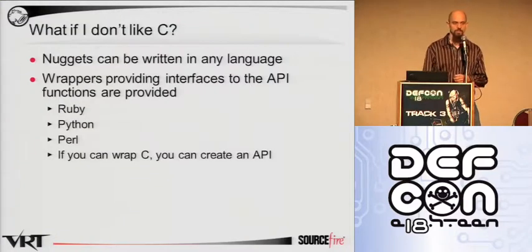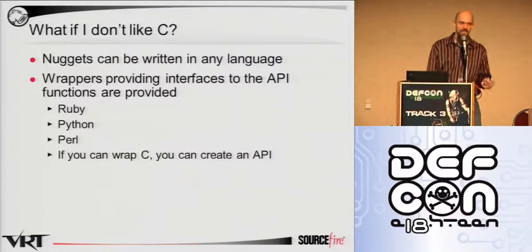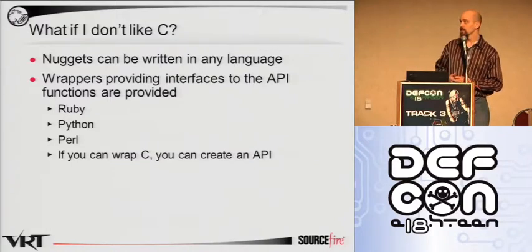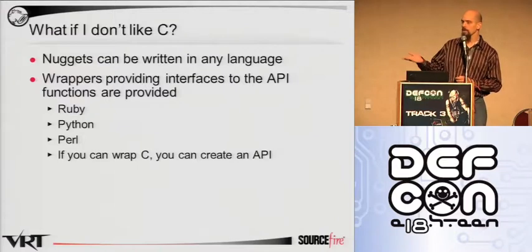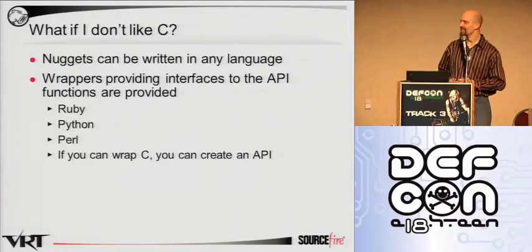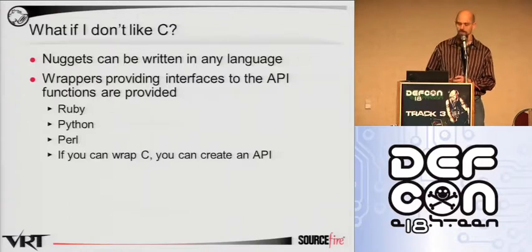What if you don't like C? Well, shame on you. But if you want to use some sort of scripting language or something other than C, we do cater to that. Ruby, Python, and Perl APIs are close but not available right now. If you have any other language you want to write nuggets in — Haskell, Smalltalk — just create a C wrapper for it. If it's available, it can be done.